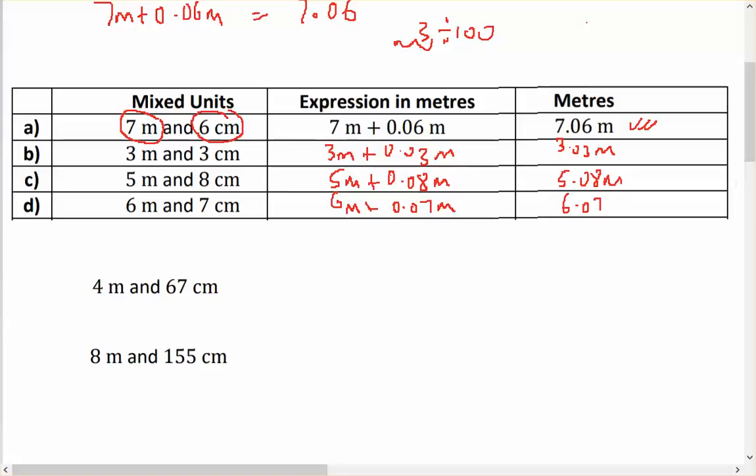And last two questions, 4 metres plus 67 centimetres will be 4 metres plus 67 divided by 100, move the decimal point 2 spots, is 0.67 metres, or 4.67 metres.